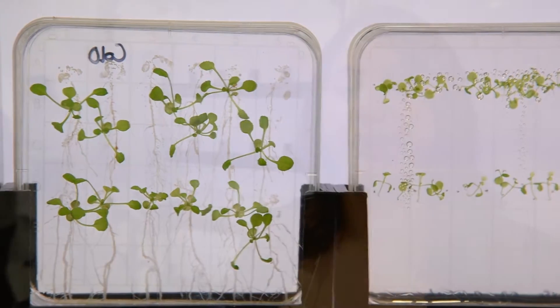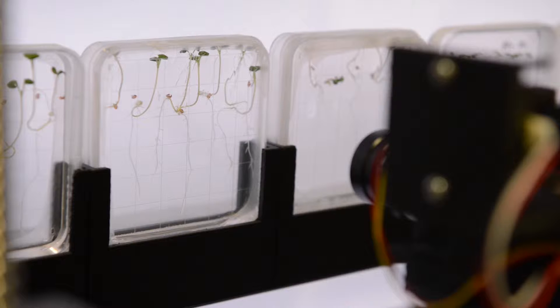Right now, plant scientists would take the pictures by themselves and then try to analyze different parts of the plants, including the root length, and then use that for data analysis.